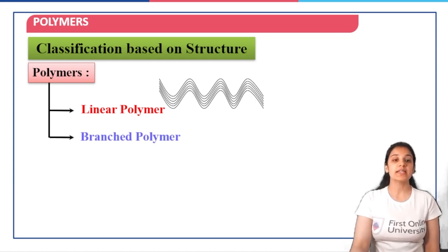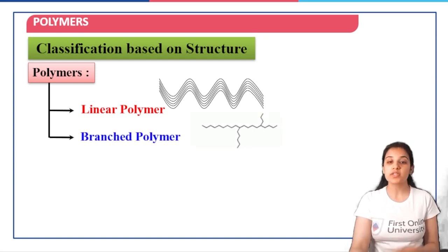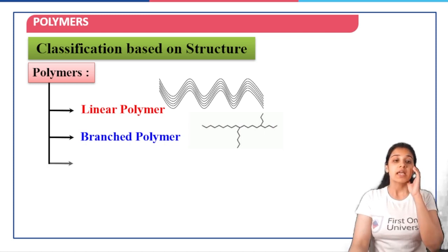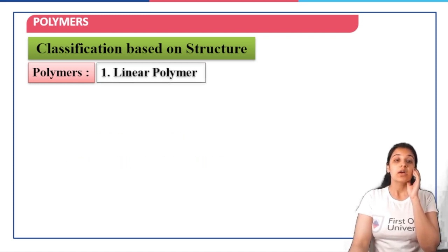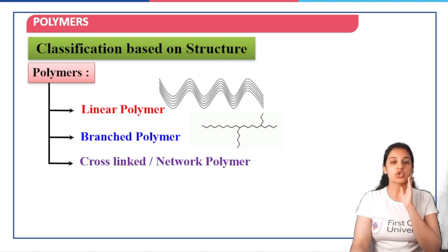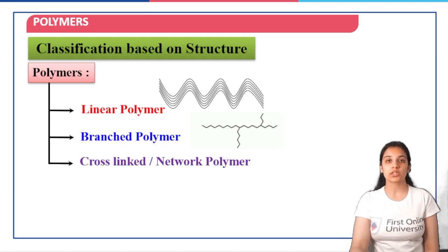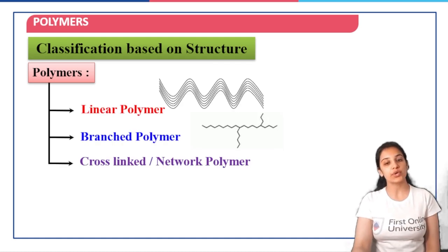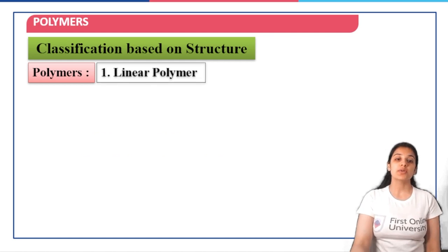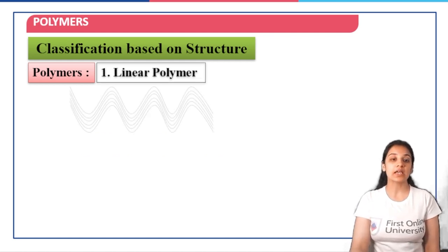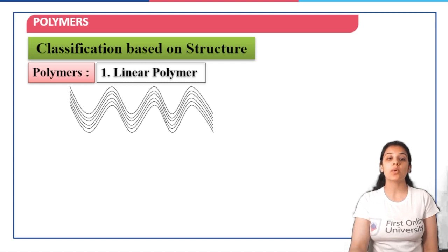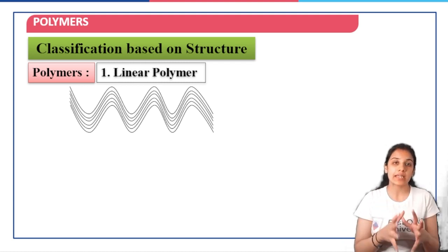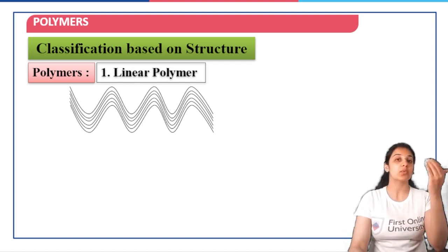As you can see in the picture, we have branched polymers where you will have branches emerging out of the straight chain. Then we have cross-linked or network polymers. The picture is not shown here but when we discuss these in detail, you will have pictures also. So let us first start with linear polymers. As you can see in this picture, there are no branches present.